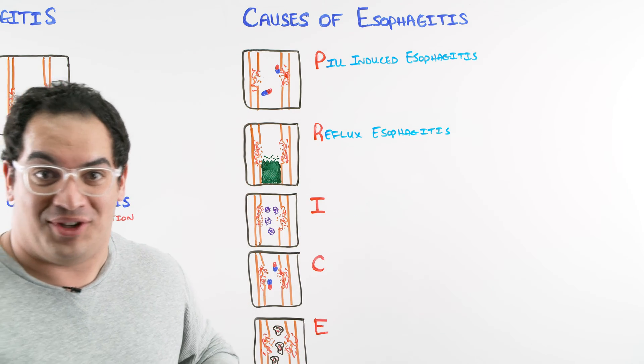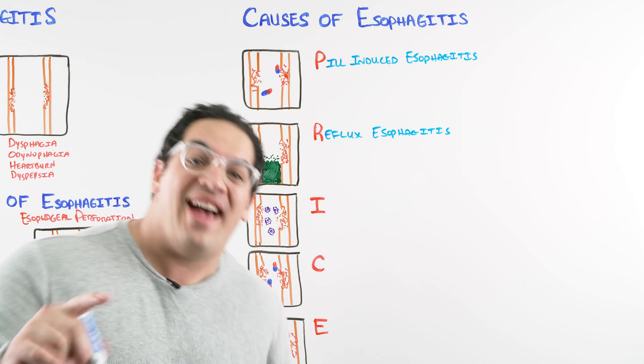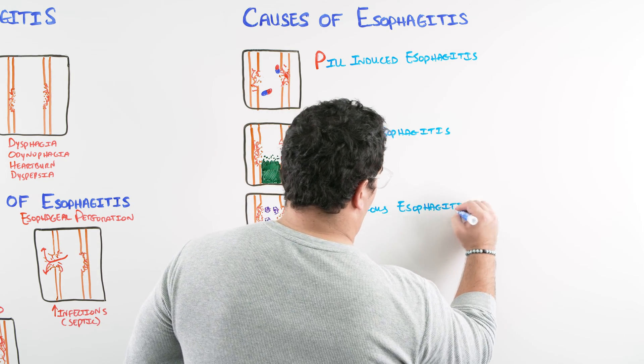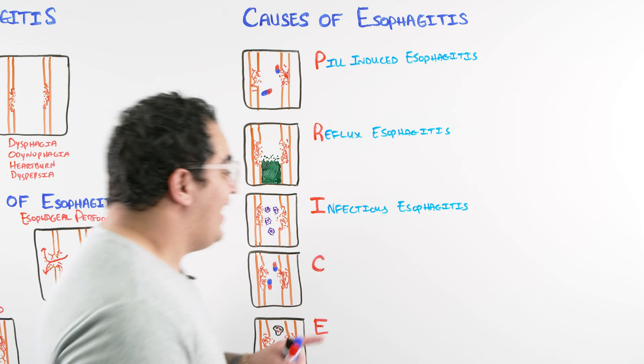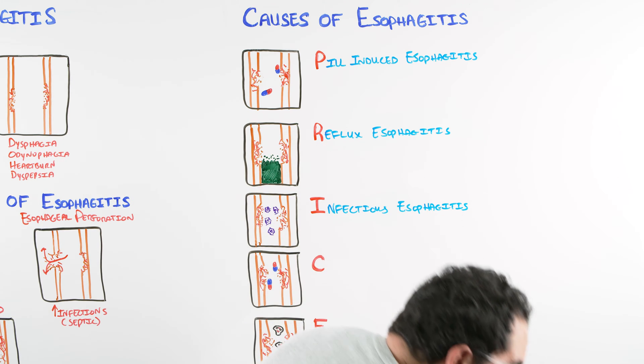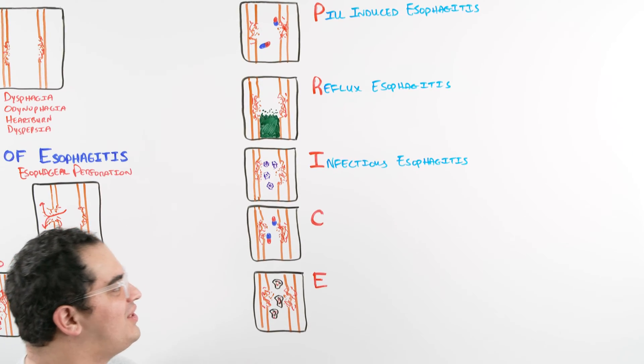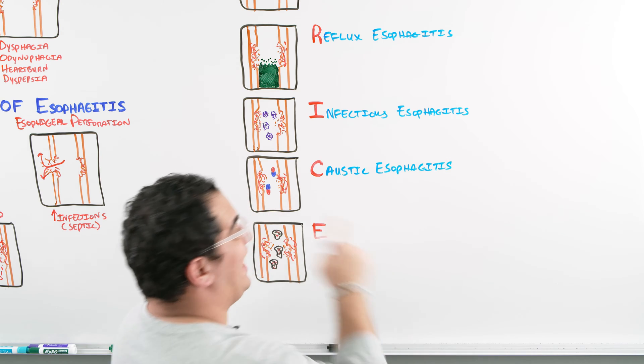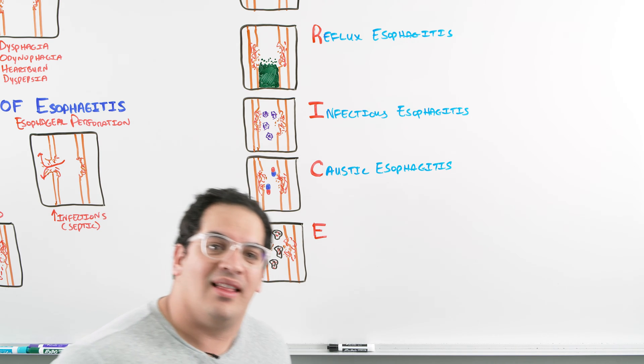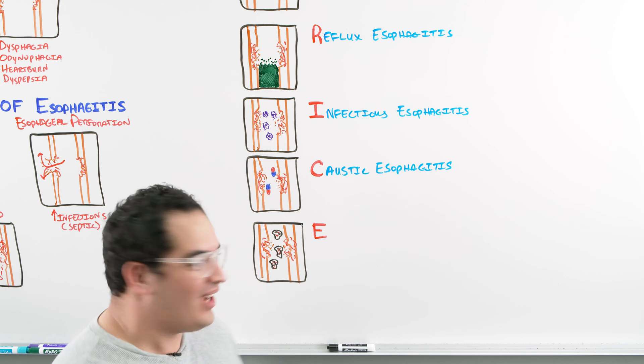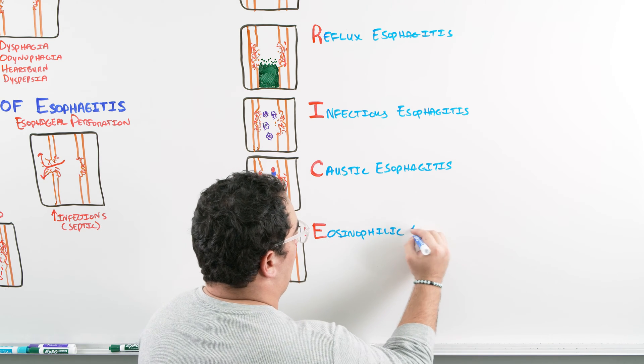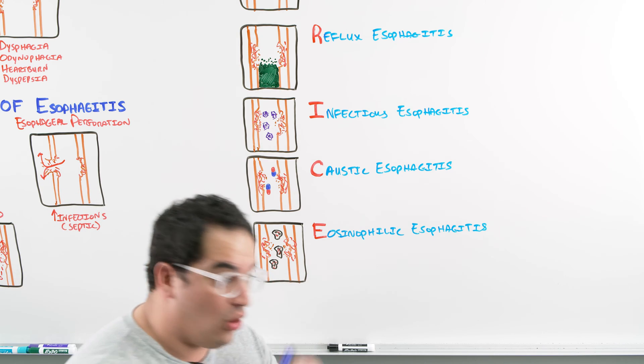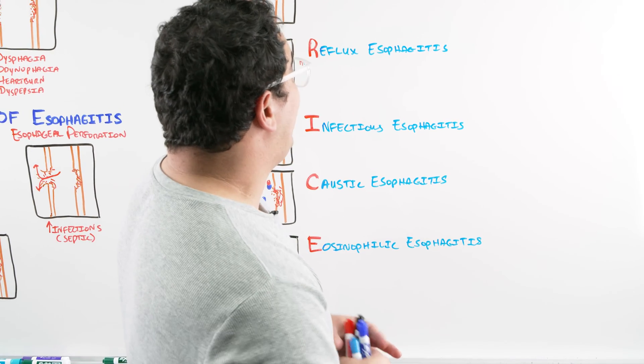The patient will present with odynophagia, dysphagia, retrosternal chest pain, dyspepsia. The scary complications include strictures, perforation, as well as watch out for GI bleeding. Now what are the reasons that esophagus is all jacked up and inflamed? Well, you pay the PRICE when you have esophagitis. I know it's corny, but that's the mnemonic: PRICE.